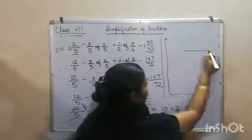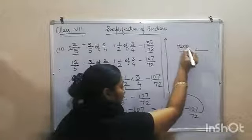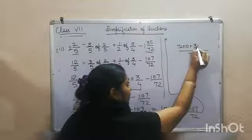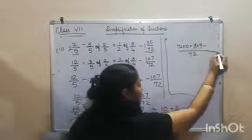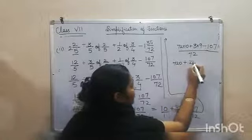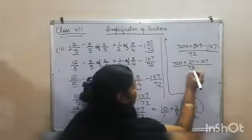That is 72. So it will become 72 times 10 plus 3 times 9 minus 107. 720 plus 27 minus 107 upon 72.